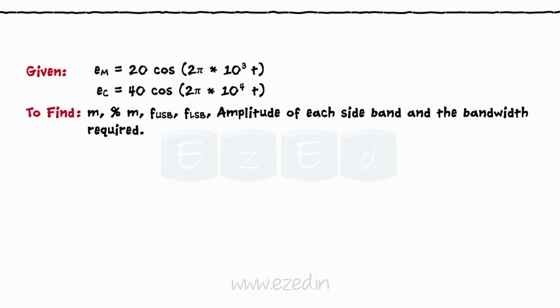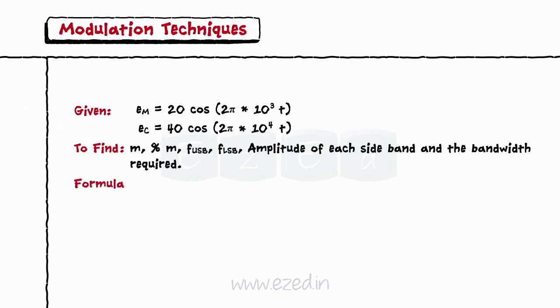For that, we use standard equations of modulating signal and carrier signal and the formula m = Em/Ec, and bandwidth = 2 × fm.